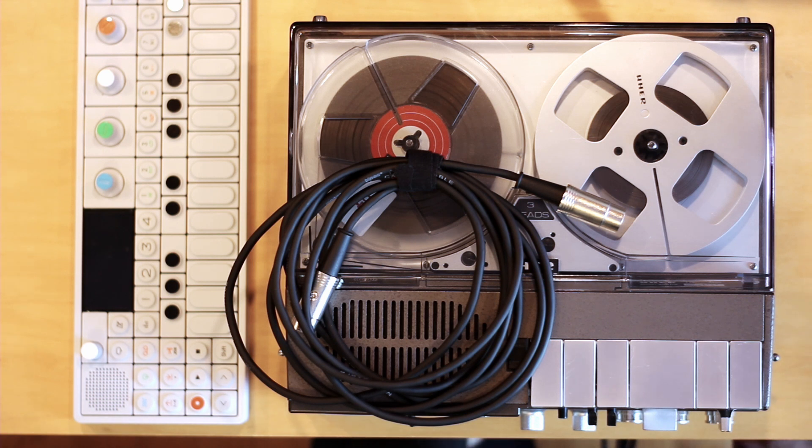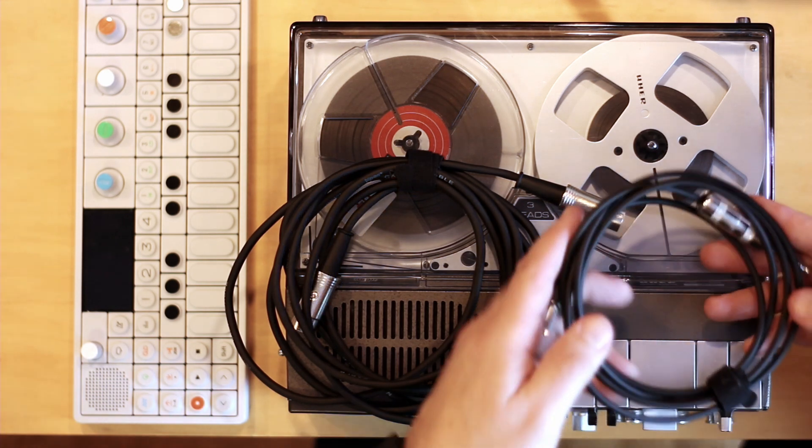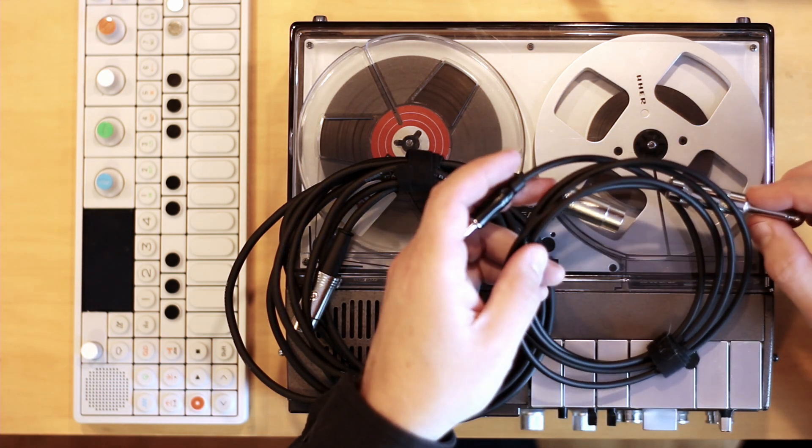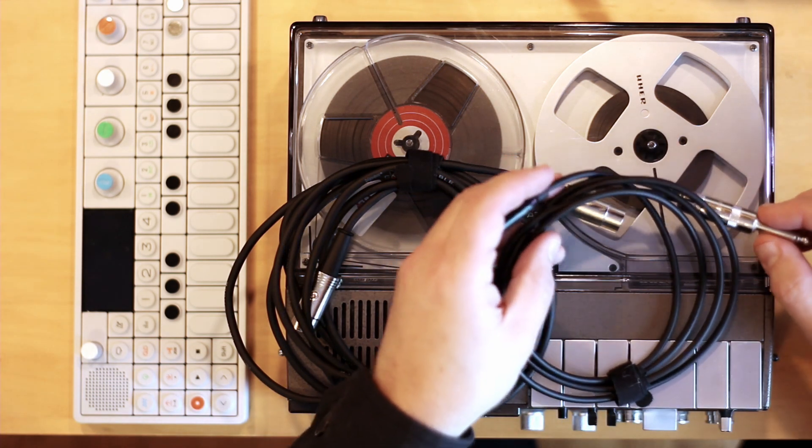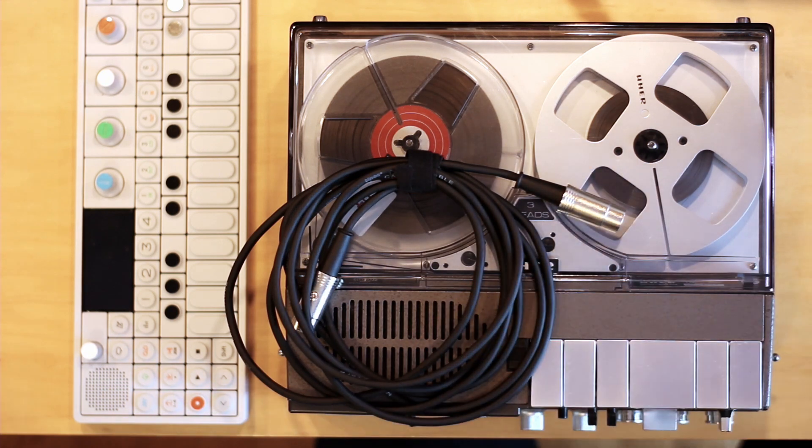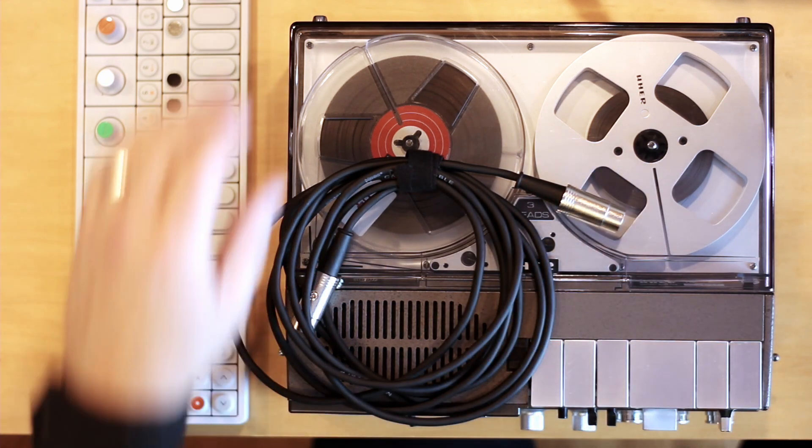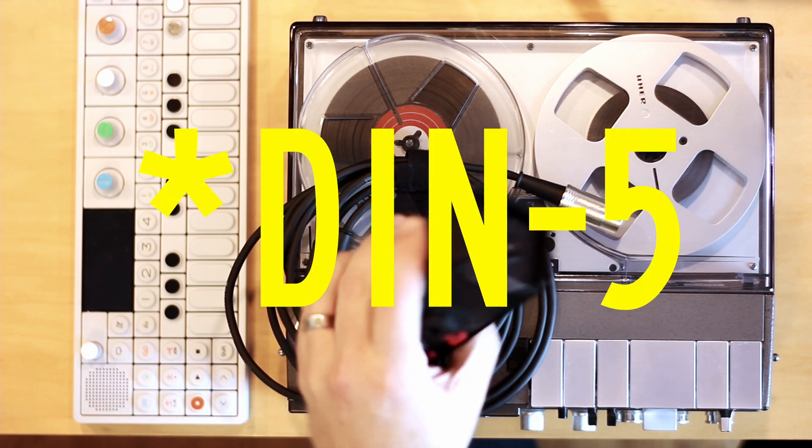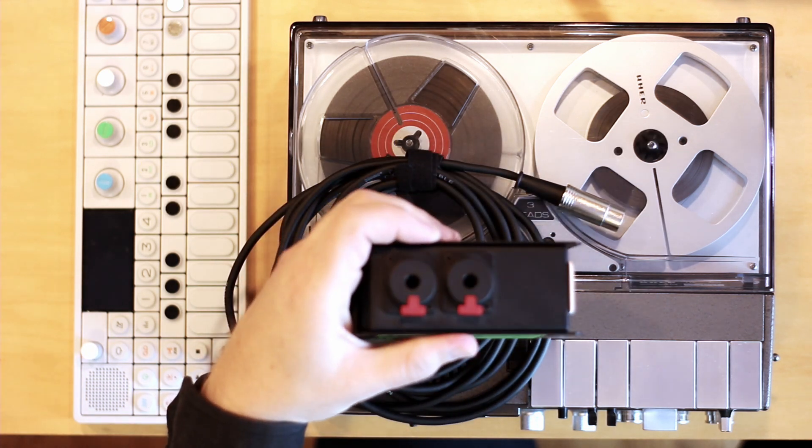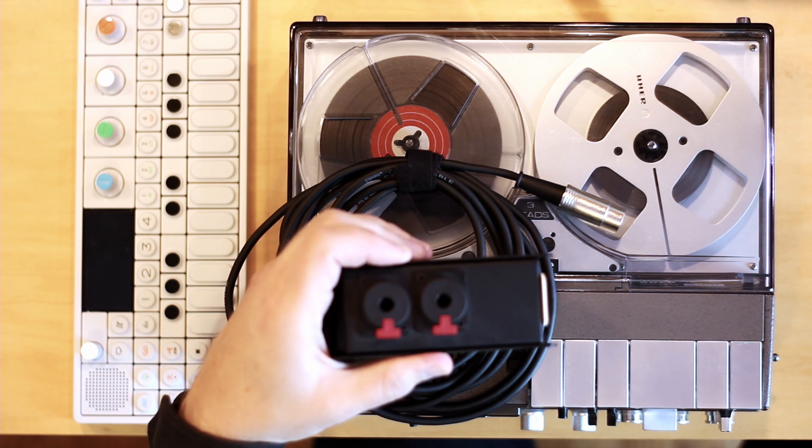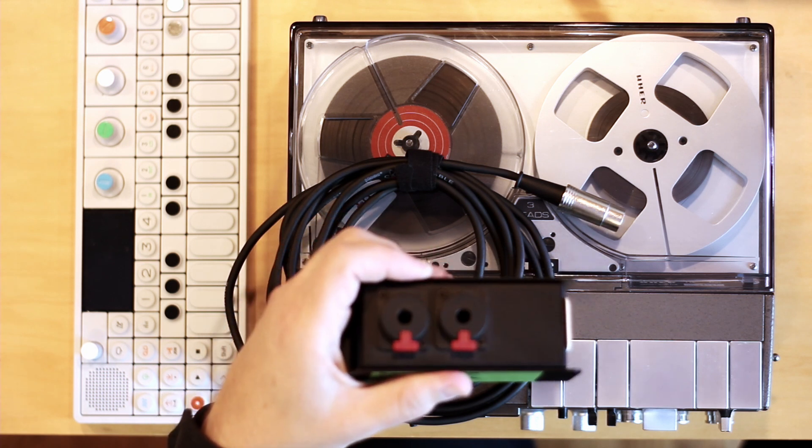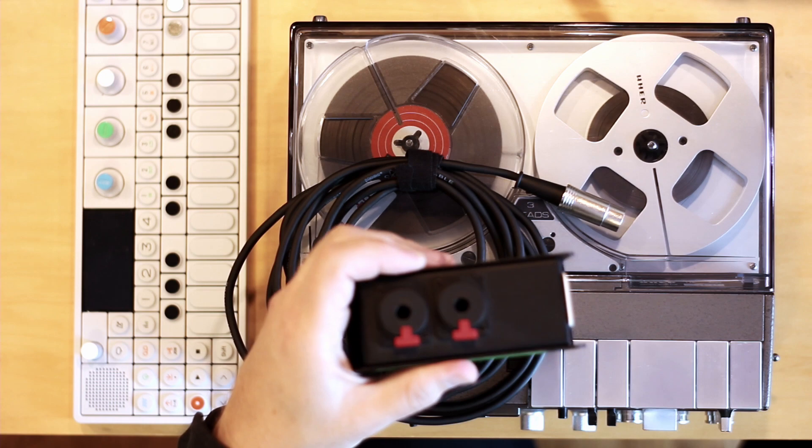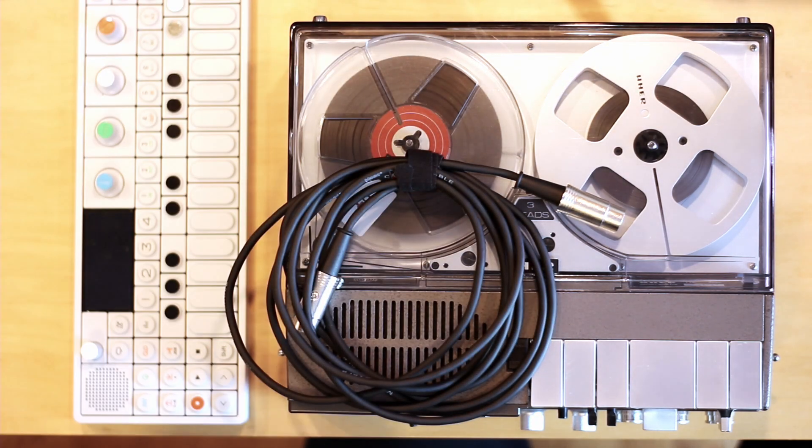So instead what I thought was, look, I already have cables like this for going between like my modular and other stuff and my OP-1 and a line input. So why don't I just make a little box with a MIDI on one side and just a quarter inch - sorry I don't know what that is in metric - but also known as a tip sleeve or a tip ring sleeve cable, TRS or TS.